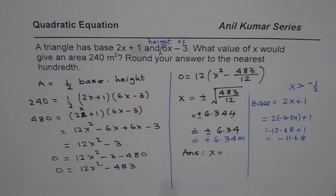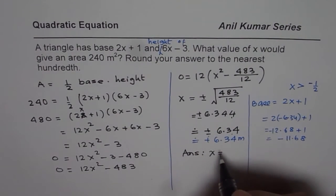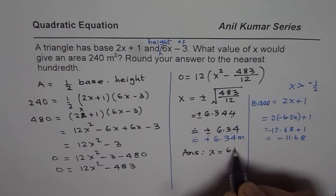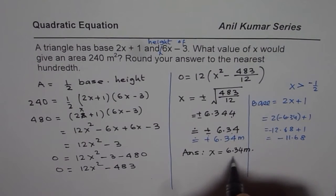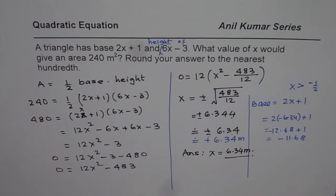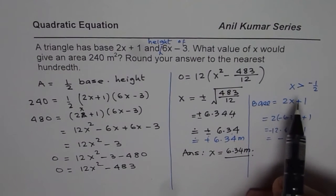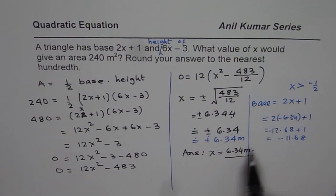Since we have to write only x value to hundredth place, we should include units in this. So x is equal to 6.34 meters for us. I hope it is important to appreciate here that we should find the restrictions to x and then include those restrictions while writing our answer. Also, include units for x in your answer. Thank you and all the best.